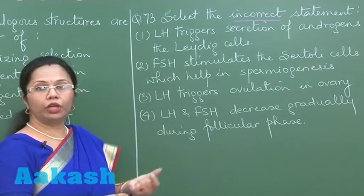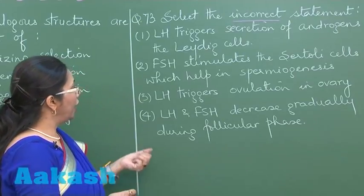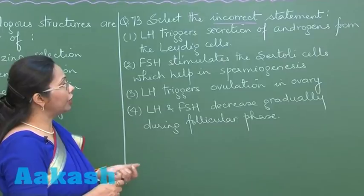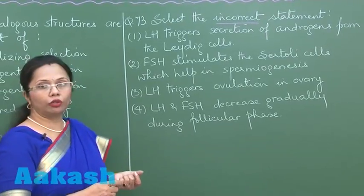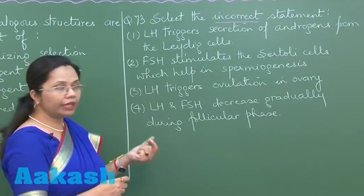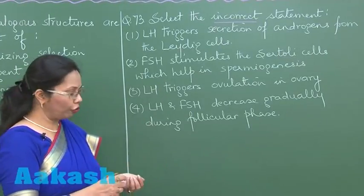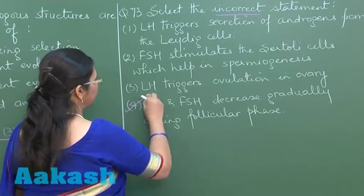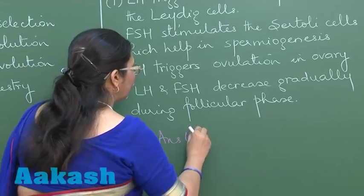LH triggers ovulation in the ovary: that's also correct. The fourth option states that LH and FSH decrease gradually during the follicular phase — this is wrong. They will be increasing gradually until they reach their peak just before ovulation. So this is the incorrect statement, and the answer is option four.